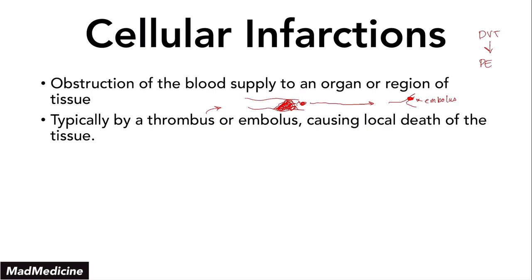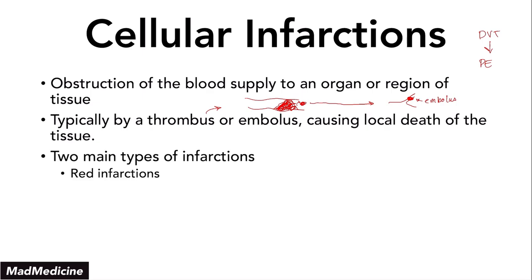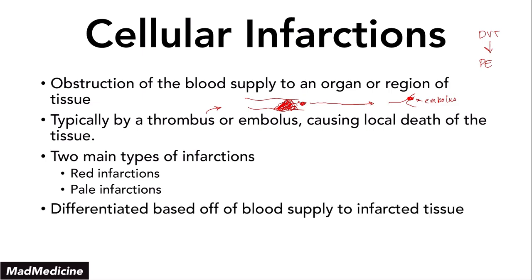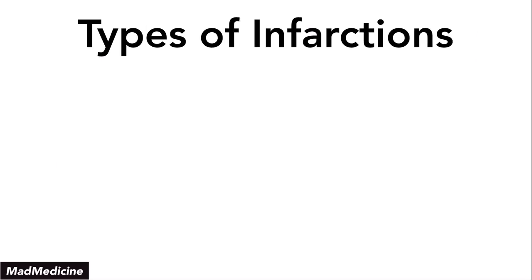There are mainly two types of infarctions we're going to discuss today: red infarctions and pale infarctions. They have to do with the color and the way the tissue looks. The main differentiation is going to be based on the blood supply of the infarcted tissue. Let's dive in so you can get a better understanding of what a red and a pale infarction look like, in case you get a photo during your test.